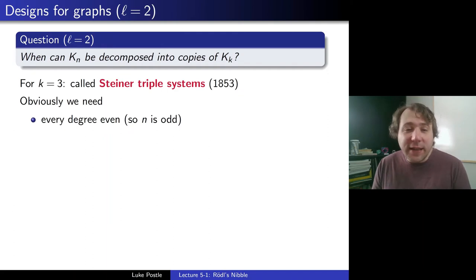Now there's some obvious necessary conditions that we need for this to be true. One, we need that every degree is even, and thus n would have to be odd, as the degrees will be n-1. Why do we need that? Because every vertex will have a degree of 2 in each triangle.